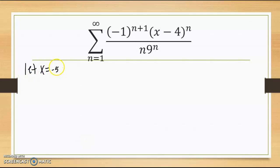So let x equal negative 5. So negative 1 to the n plus 1. Negative 5 minus 4 gives me negative 9 to the n, all divided by n times 9 to the n.